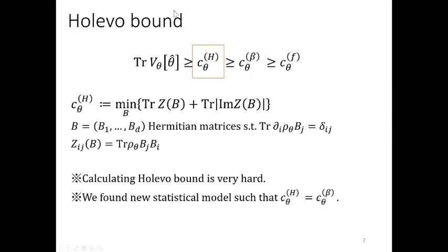It is known that the Holevo bound defined by this is more informative than them. However, in general, to calculate Holevo bound is very hard. In our research, we found new statistical models such that the Holevo bound equals beta-lower bound.